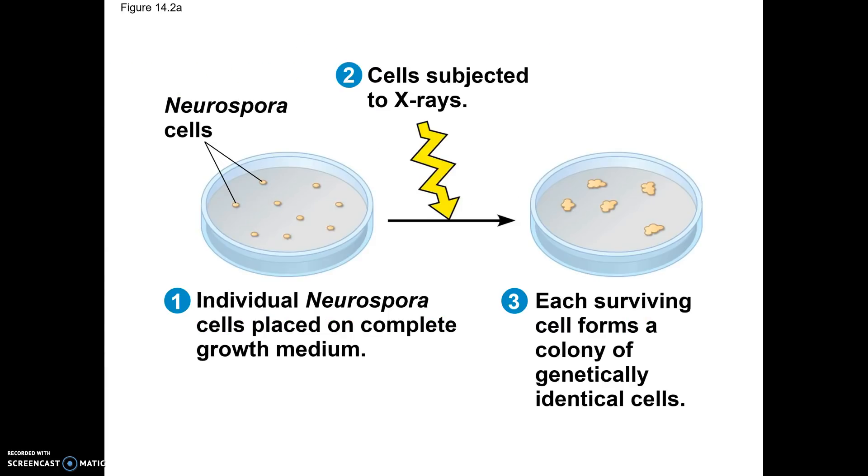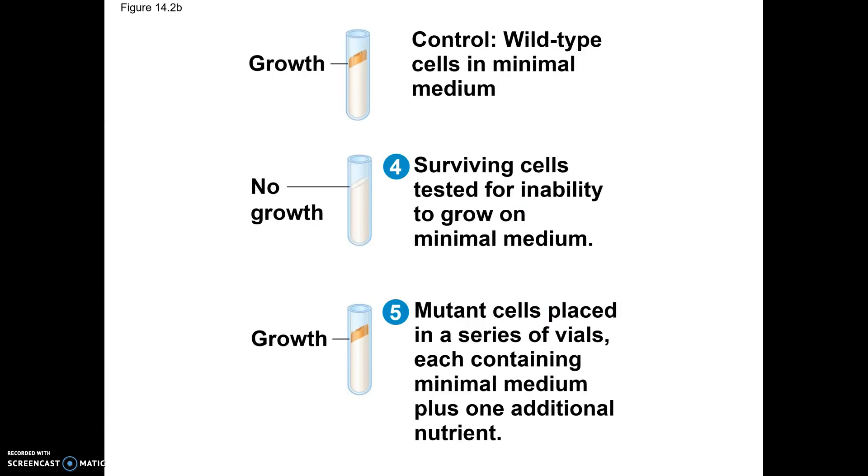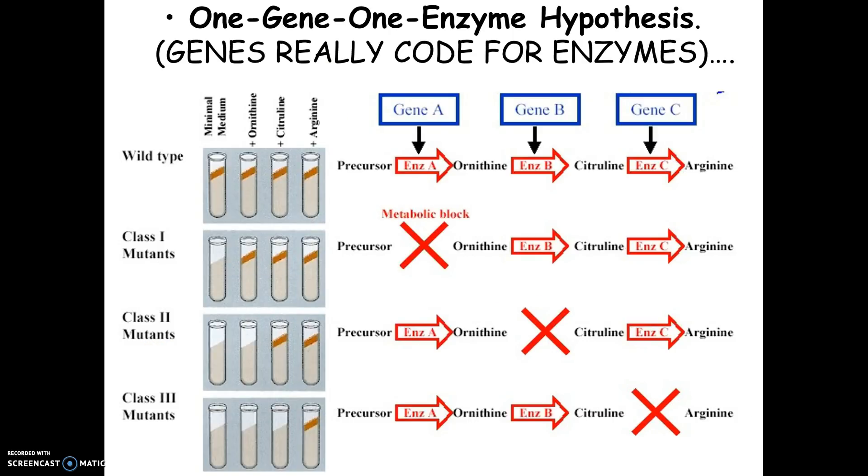So they took these Neurospora. They hit them with x-rays. They knew that x-rays would damage the DNA. And then what they did was they would wait and see what kind of things the Neurospora would now be able or not be able to do. So this is a little confusing, but in essence, here's what they did. If they, for example, had a Neurospora that had a mistake in this enzyme, enzyme A, then if you put it on the precursor, which is sort of like the food source, in essence, the fungus wouldn't survive. Because since it couldn't break the precursor into ornithine and go through this series of steps, it couldn't make this amino acid that it needed and it would die.